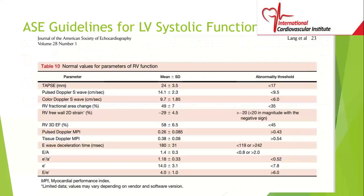If you're in an institution that can do RV ejection fraction using three-dimensional echo, they can do that, though it's not a routine test. The current value for TAPSE — tricuspid annular plane systolic excursion — has changed over the years. In the four-chamber view, you put the cursor across the lateral tricuspid annular plane; it's an M-mode measurement. It's abnormal if it's less than 17 mm — 17 and above is normal.